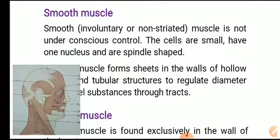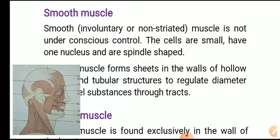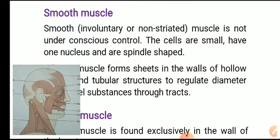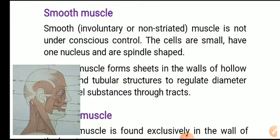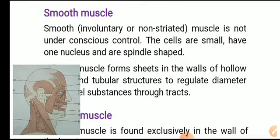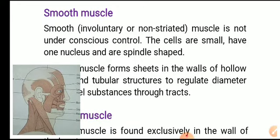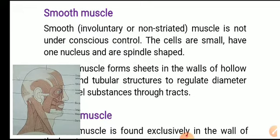Smooth muscles are involuntary or non-striated muscles. They are not under conscious control — for example, our digestive system, arteries and veins have smooth muscles that we cannot voluntarily control. The cells are small, have one nucleus, and have a spindle shape.